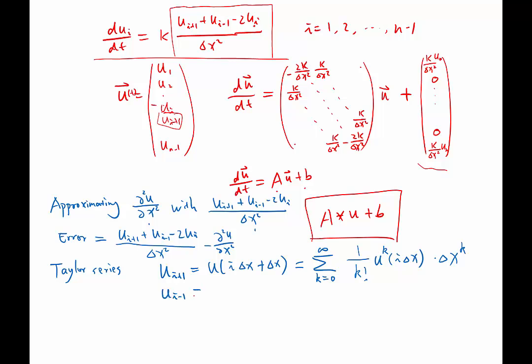u_{i-1} would be equal to u at i delta x minus delta x. It is equal to the same summation, same 1 over k factorial. This is just a copy of Taylor series, i delta x, except for instead of plus delta x, here we get a minus delta x to the k-th power.